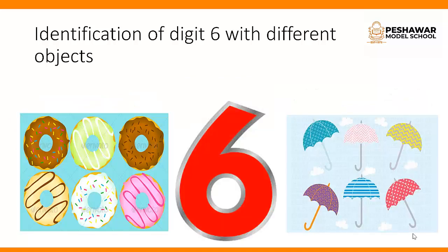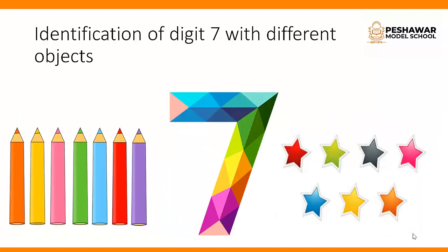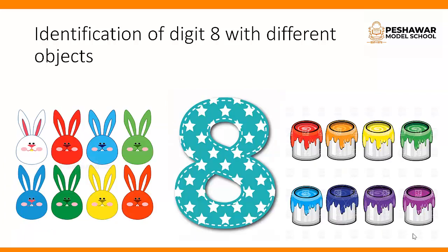Next we have 6, and we have 6 donuts and 6 umbrellas which shows the value of 6. Next number is 7. Here we have 7 colorful pencils and 7 stars which describe the value of 7. Next we have 8. We have 8 colorful paint buckets and 8 rabbits which describe the value of 8.